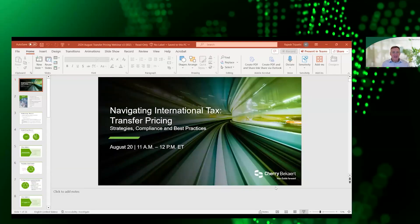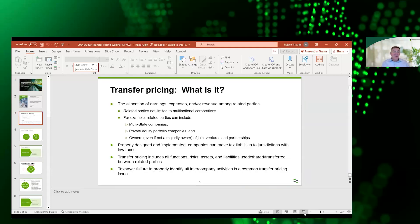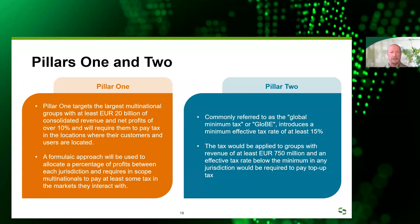On BEPS, pillar one and pillar two continue to gain traction. Pillar one is really geared towards the largest of large taxpayers — the threshold to get into that would be 20 billion euros, with at least 10% net profit margin. Pillar two is a minimum tax in jurisdictions that casts a wider net, applying to companies over 750 million euros — really the same companies required to file country-by-country reports.